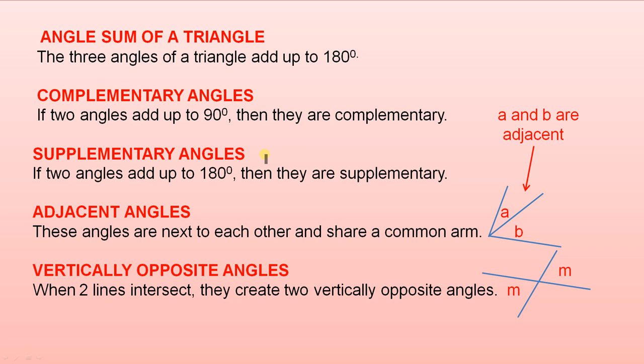Supplementary angles. If two angles add up to 180 degrees, then they are supplementary. For example, 120 degrees plus 60 degrees equals 180 degrees, so 120 degrees and 60 degrees are supplementary.